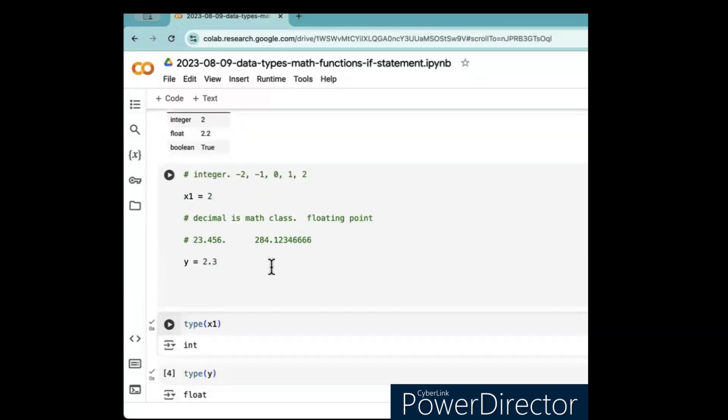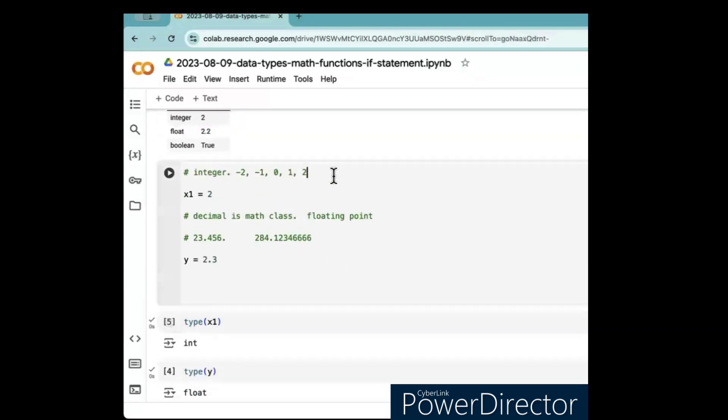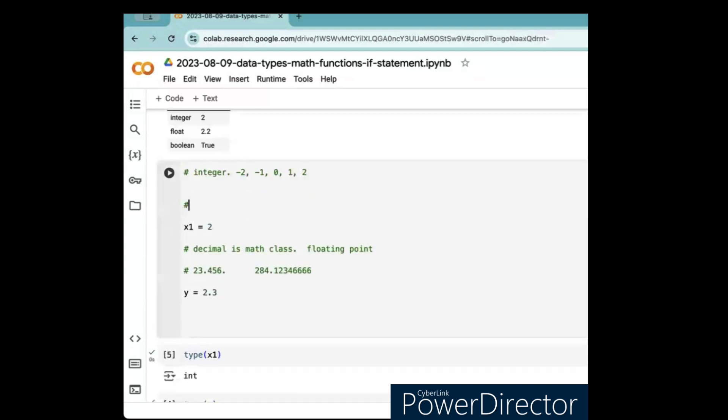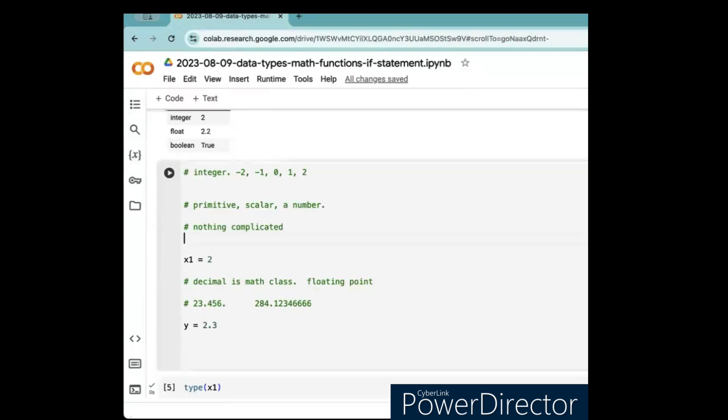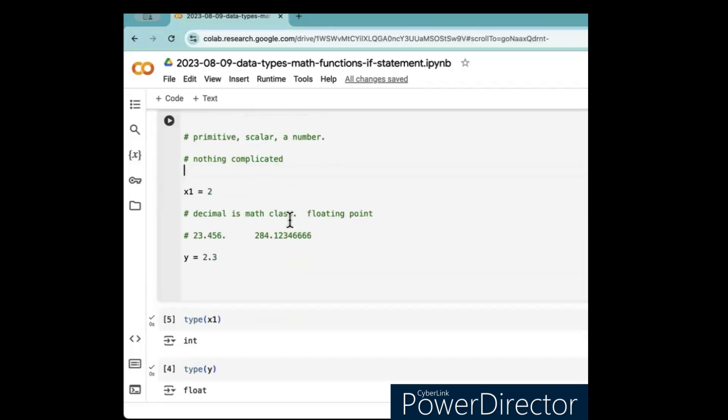Then I can say, what type is x1? It's an integer. Okay. Now, we also, okay, well, you would also call these, another thing you call these is you call them primitives. Primitive or scalar. It just means, you know, it just means a number. It's nothing complicated.